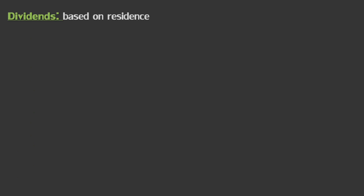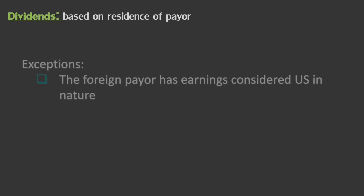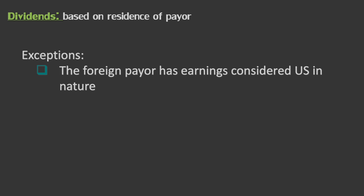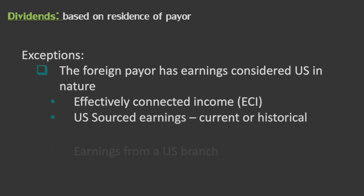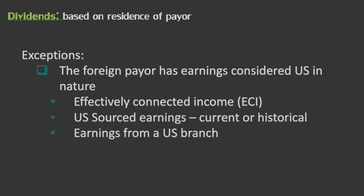Dividends are generally sourced based on the residence of the payer. In other words, if a U.S. company owns stock in a foreign corporation that pays a dividend during the year and the corporation is incorporated in France, the dividend would be sourced foreign. There are a few exceptions to the extent the underlying operations of the entity paying the dividend are not actually foreign in nature, but instead related to U.S. items of income — for example, where the payer's earnings are effectively connected with a U.S. trade or business, come from a U.S. branch, or some other U.S. source.